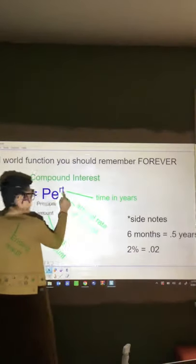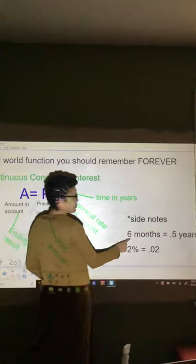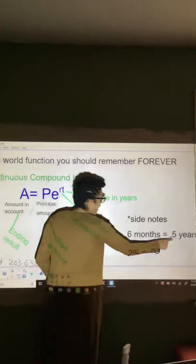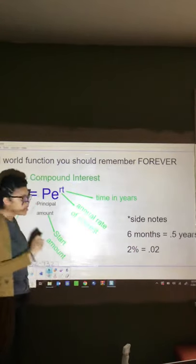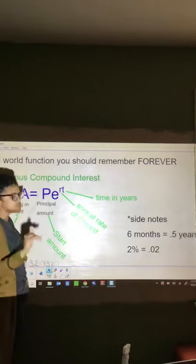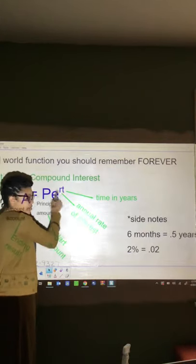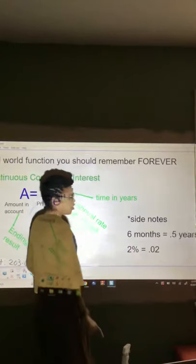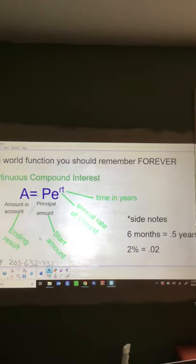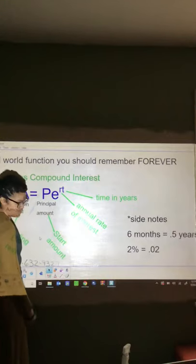Important side note: the t in the PERT function only calculates time in years — if you use any other unit the function will not work properly. If you only have six months, you can't put 6 in for t; you have to put 0.5, because six months is half a year. Also, your rate must be in decimal form. If the bank gives you 2%, you cannot just put 2 in for the rate — you must convert it to 0.02 before entering it.